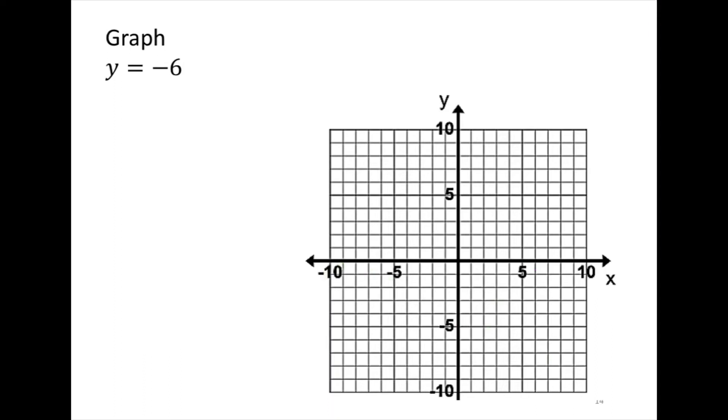So y equals negative 6, and we may be wondering, is this in slope-intercept form? It is. It's just y equals, right now we got negative 6, right? So what happened to the x's? It just means there are no x's.